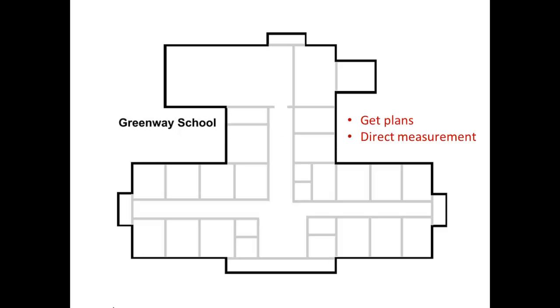Let's start with the total gross floor area in square feet. There are two approaches: you can either get a set of the school's building plans, spread them out on a table, get a ruler, and start measuring and calculating the areas that way. Or you can get a tape measure and somebody to help you, and go around the school and measure the area directly.